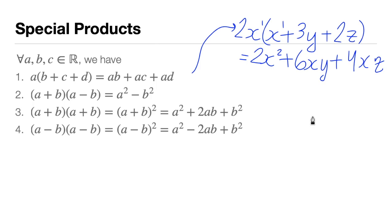Number two: (a + b)(a - b) = a² - b². For example, (2 + y)(2 - y). First condition: the first terms must be the same. Second condition: the second terms must be the same.